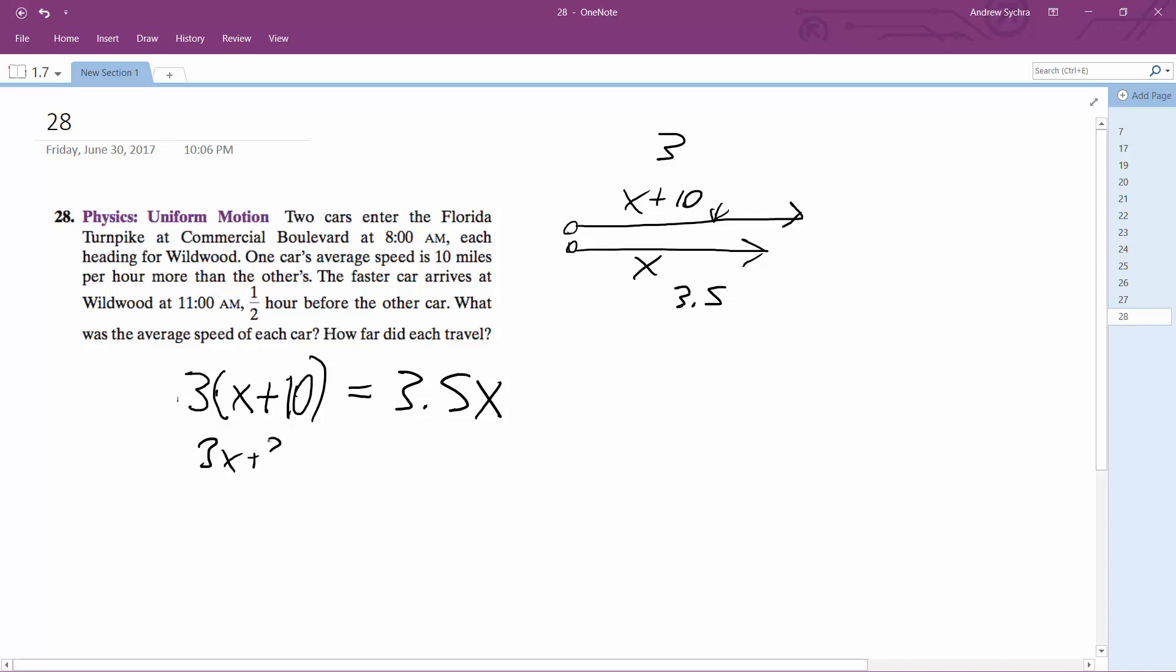So 3X plus 30 is equal to 3.5X. So you solve here, the standard car is going 60 miles an hour.